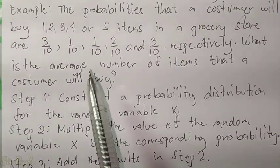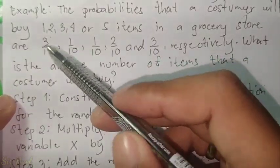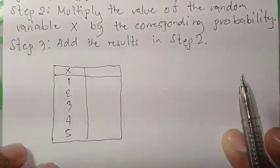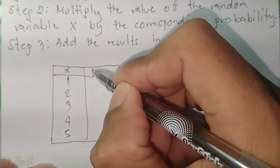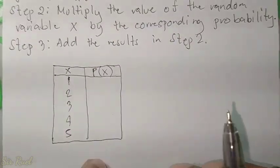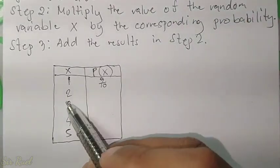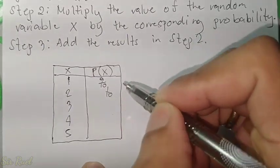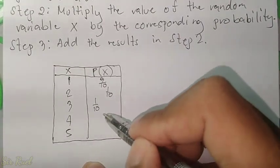So here: 1, 2, 3, 4, 5 and their corresponding probabilities are 3/10, 1/10, 1/10, 2/10, and 3/10. We label the second column as P(x), or the probability of x. Based on the problem, the probability of getting 1 is 3/10, getting 2 is 1/10, getting 3 is 1/10, and getting 4 is 2/10.